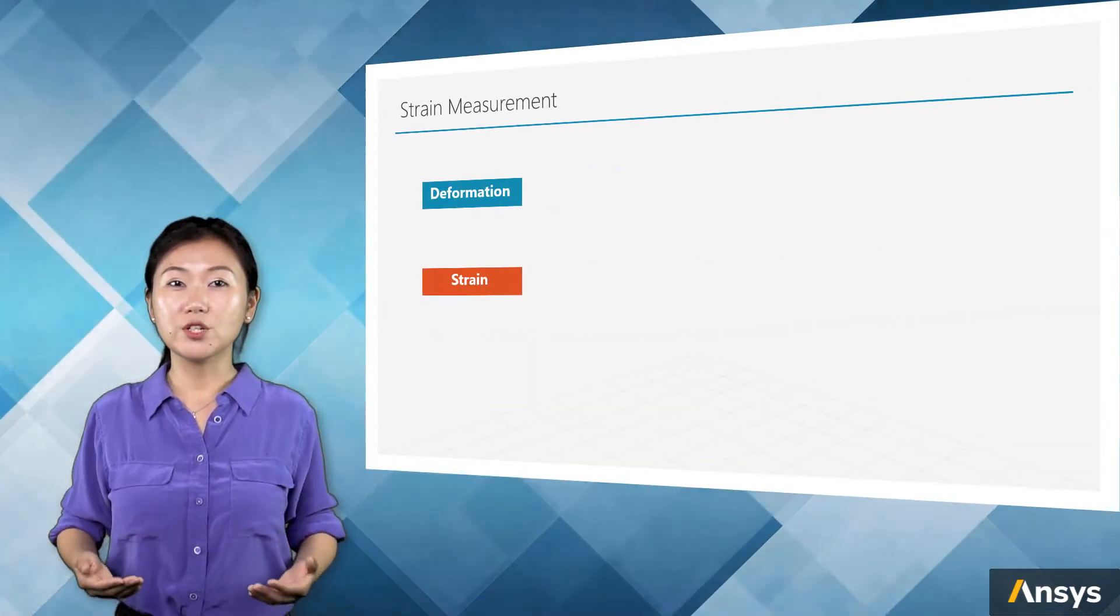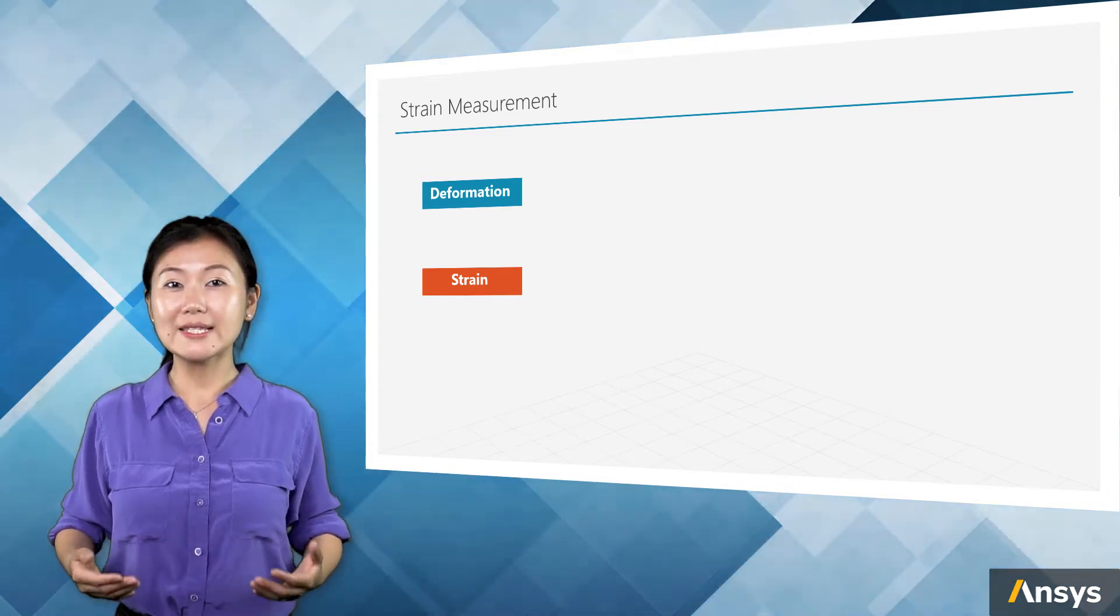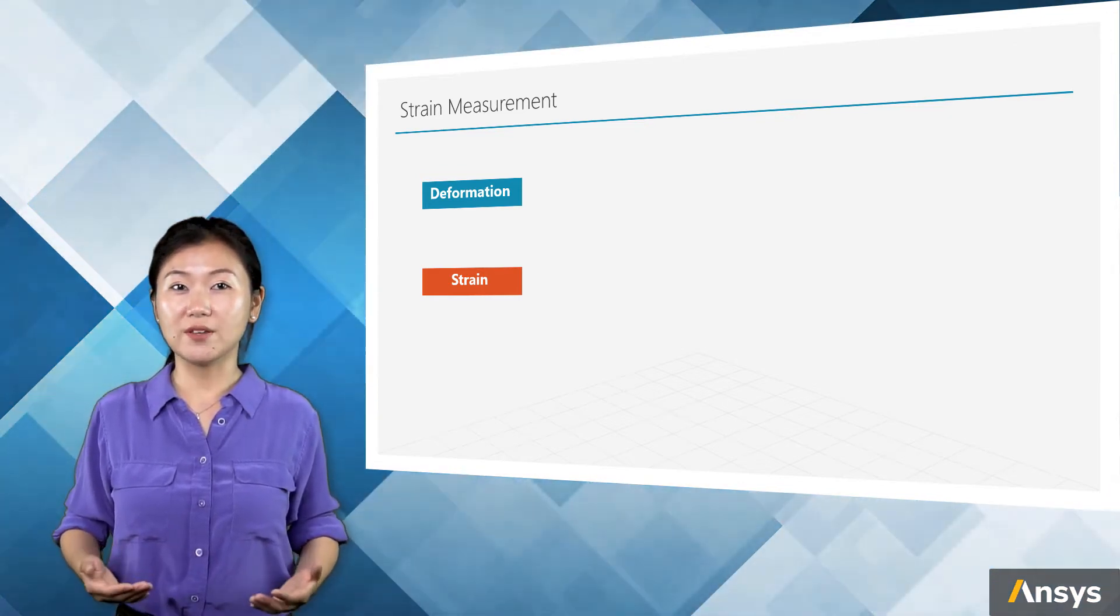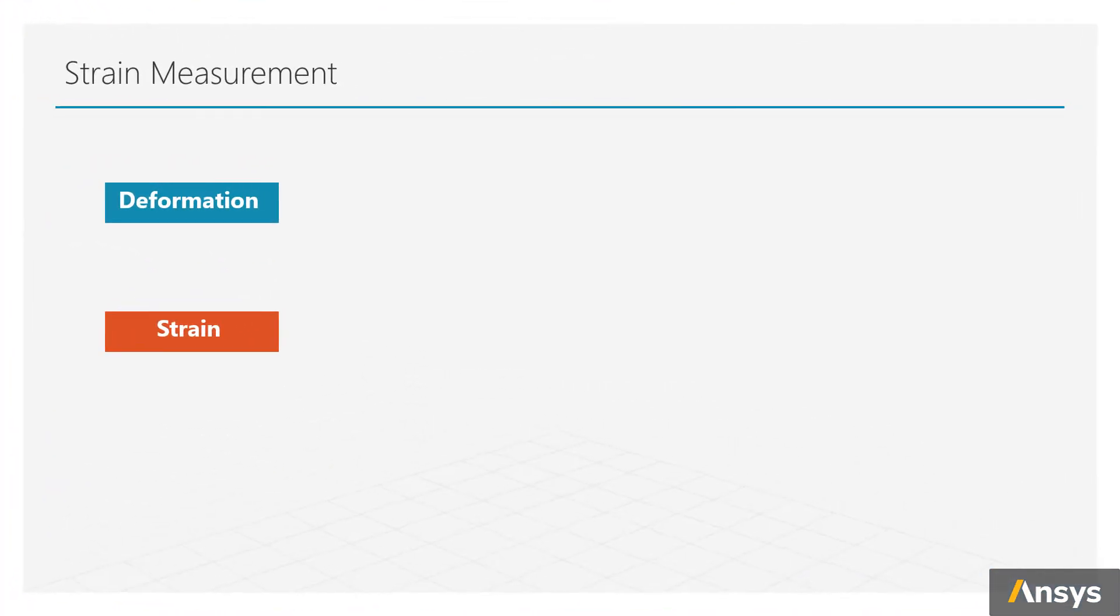Let's move forward to the definition of strain. First of all, let's think of deformation instead of strain for now. How is deformation defined? As we know, deformation is measured by subtracting the original shape from the deformed shape. Deformation is unique. No matter what condition, to calculate deformation, this is the way to go.